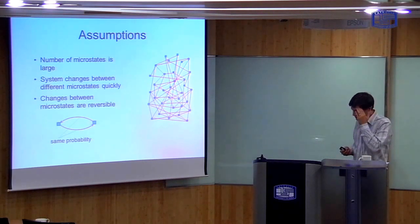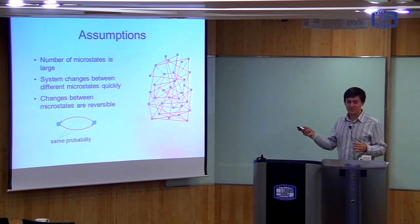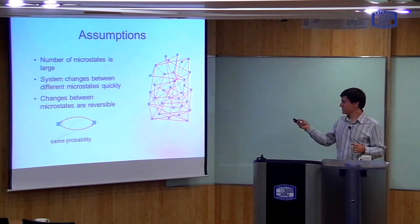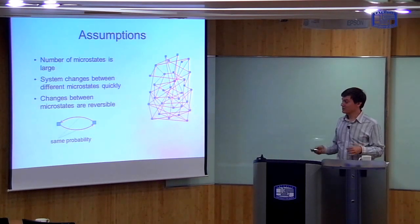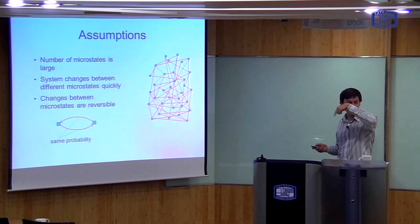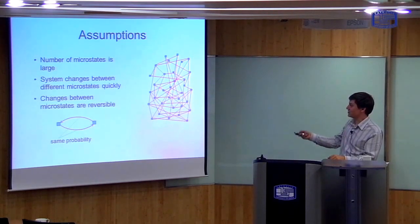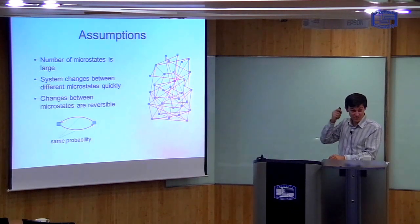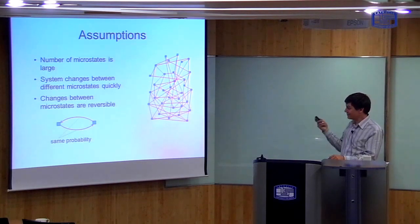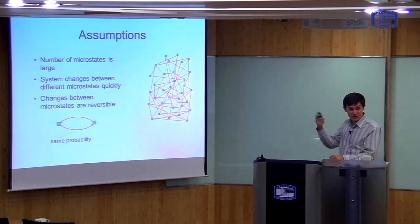Our general assumption is that any system can be described like this. For any system, there's a large number of microstates — which I draw symbolically as these little dots — and it's a complete specification of the system. For a gas, this is telling you the velocities of all the particles. For a paramagnet, it's telling you the direction of all the arrows. We assume there's a large number of them and that they're connected — there's a large number of connections between different microstates. Then, as time goes forward, the system changes microstates.